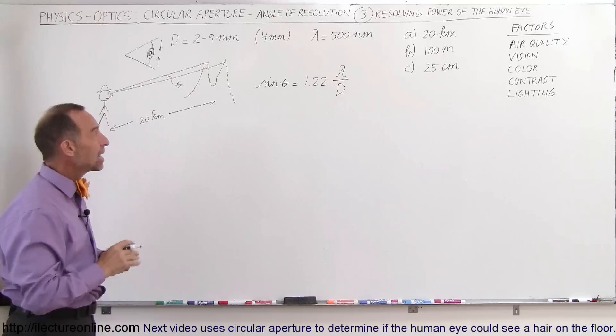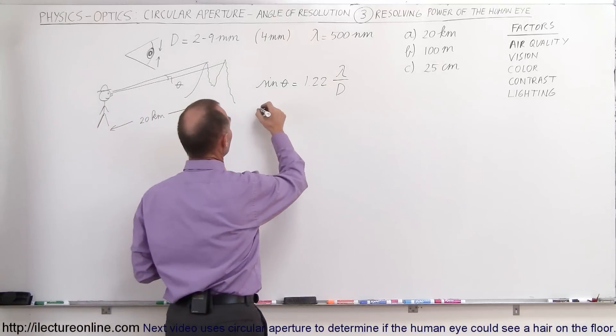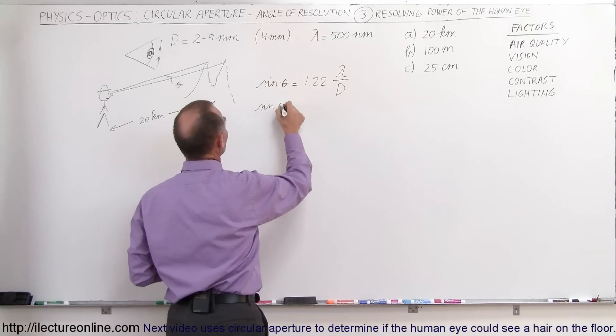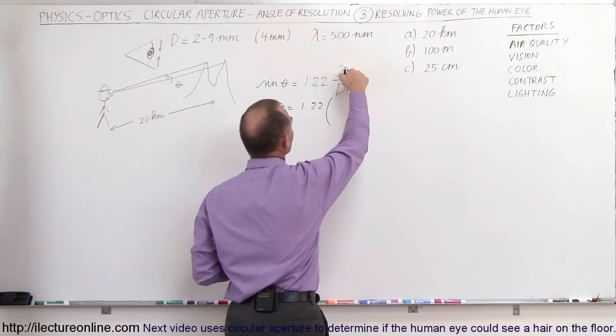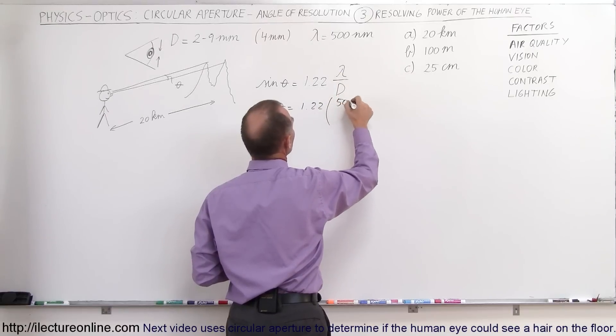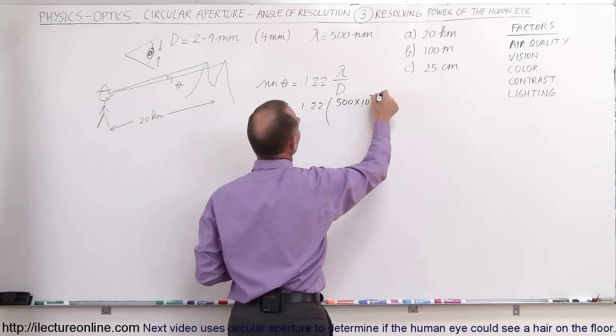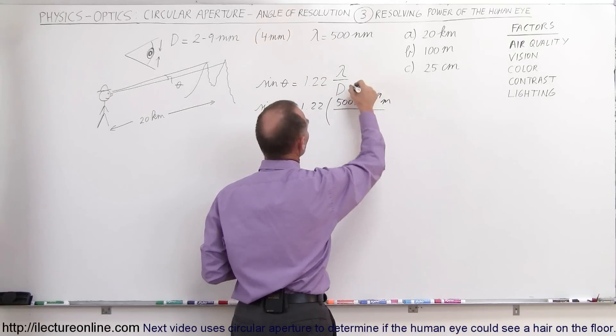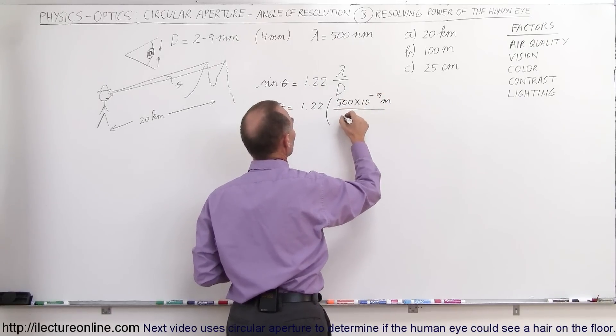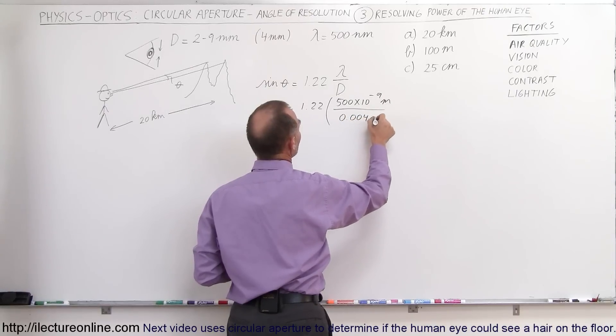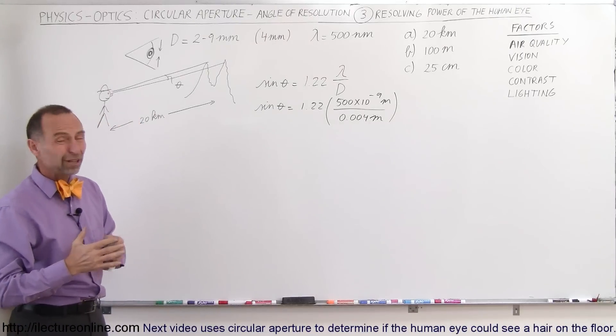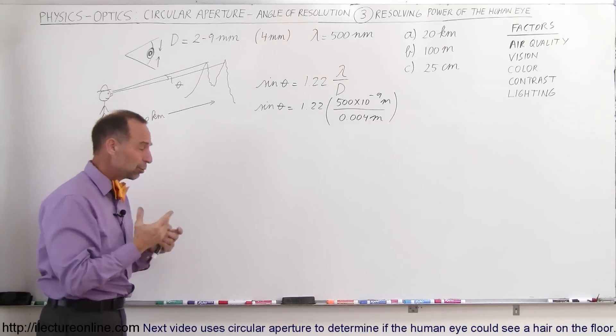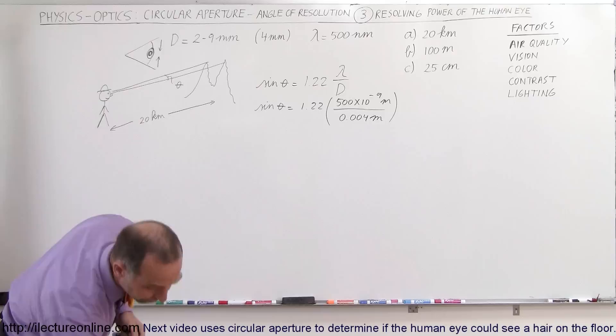Let's first find the angle. So we can say that the sine of theta, the sine of theta is equal to 1.22 times lambda. Lambda would be 500 nanometers, 500 times 10 to the minus 9 meters. And the diameter of the pupil would be 4 millimeters or 0.004 meters. Alright, that'll give us the sine of theta. Well, we can put it in terms of theta, which will be radians as well. So let's do that first.